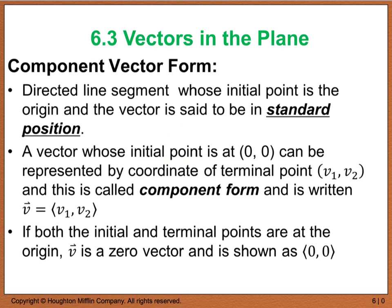When dealing with vectors, we also have what we call component form. The directed line segment whose initial point is at the origin is said to be in standard position. A vector whose initial point is at (0, 0) can be represented by the coordinates of the terminal point, called component form. We write component form using pointed bracket notation, which tells us the initial point is at (0, 0).